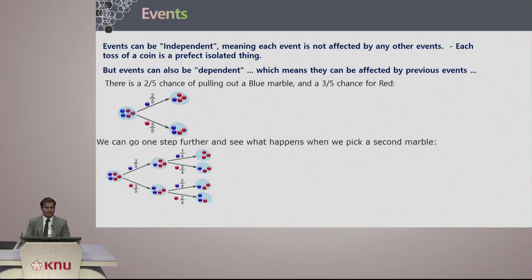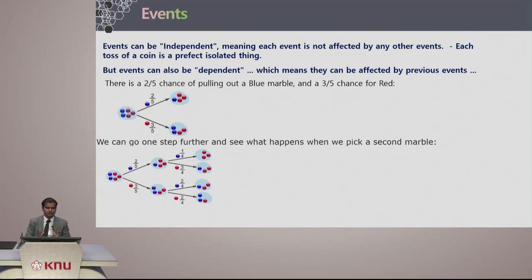But events can also be dependent, meaning they can be affected by previous events. Consider this example: you can see there are five marbles — three red marbles and two blue marbles.